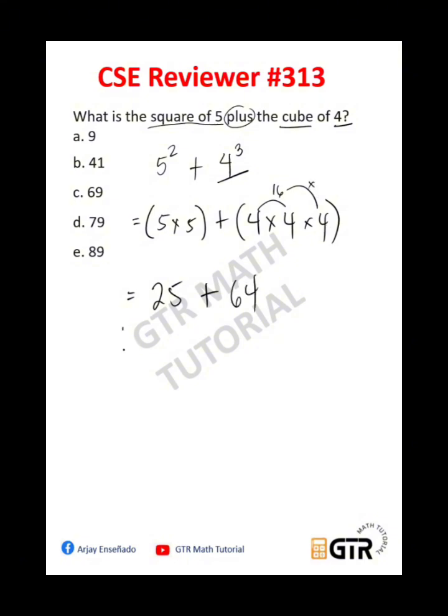So let's just add this. So 25 plus 64, that is equal to 89. So the correct answer is letter E, 89.